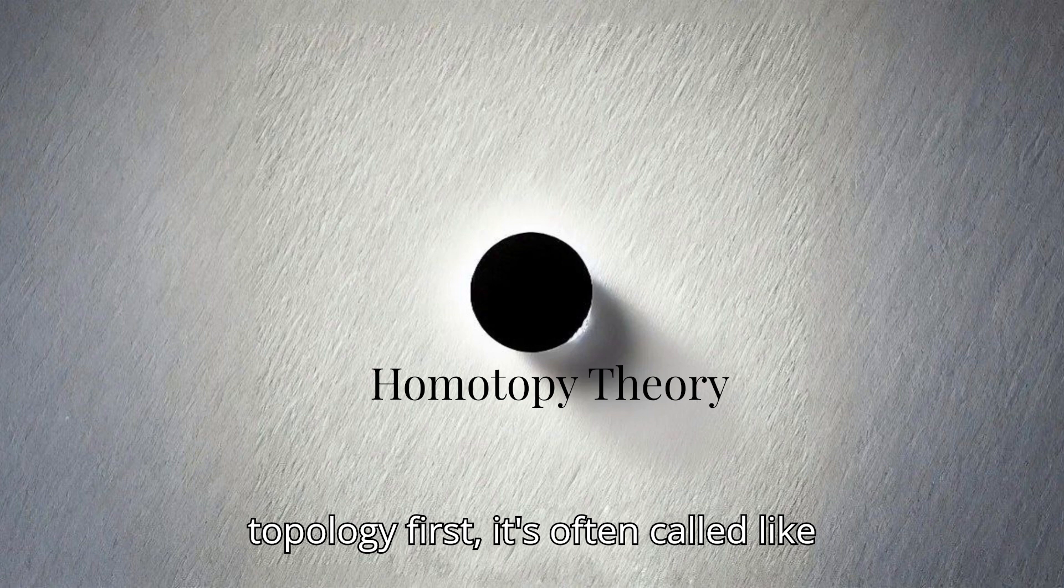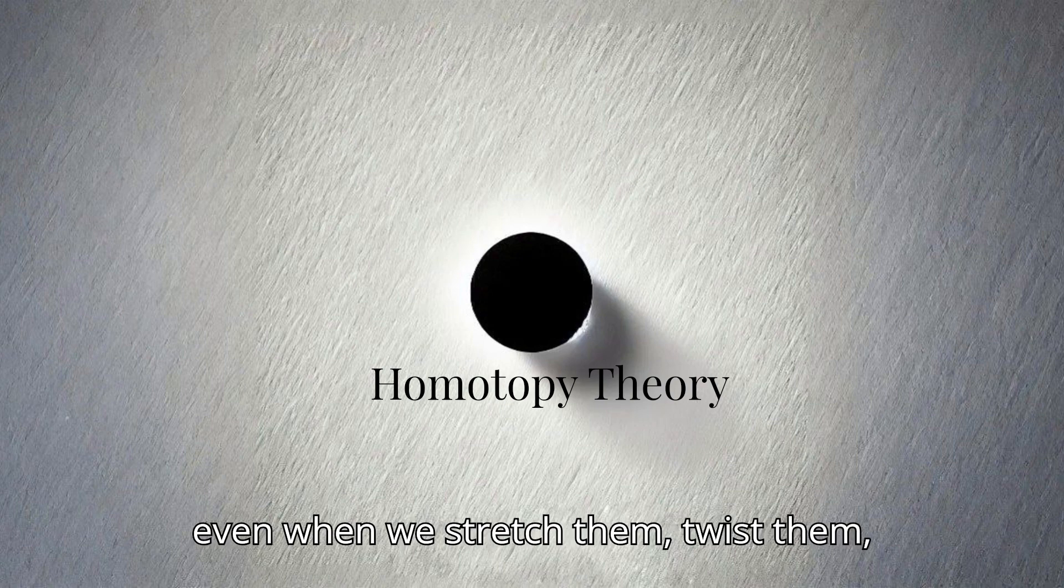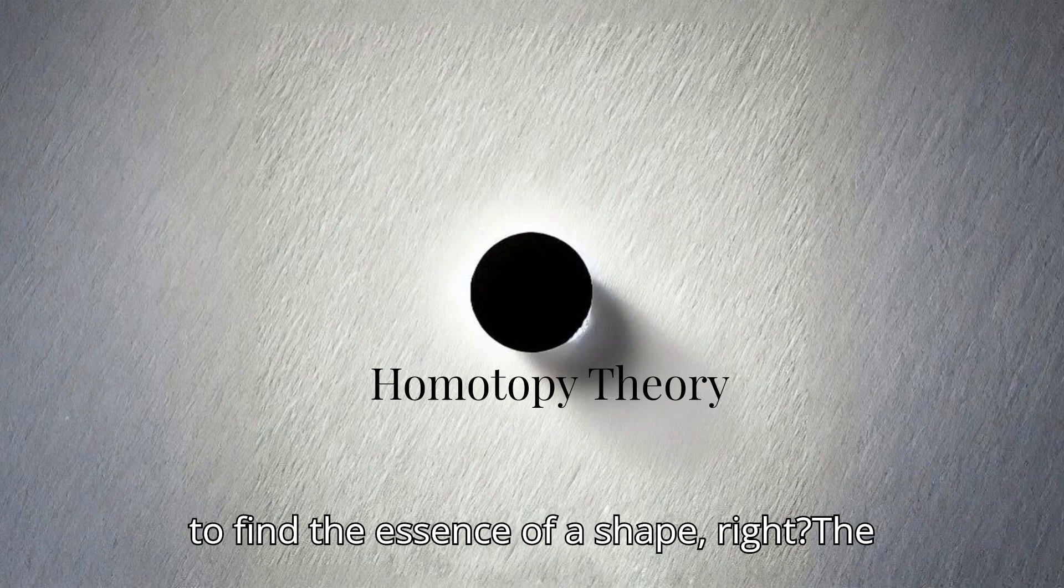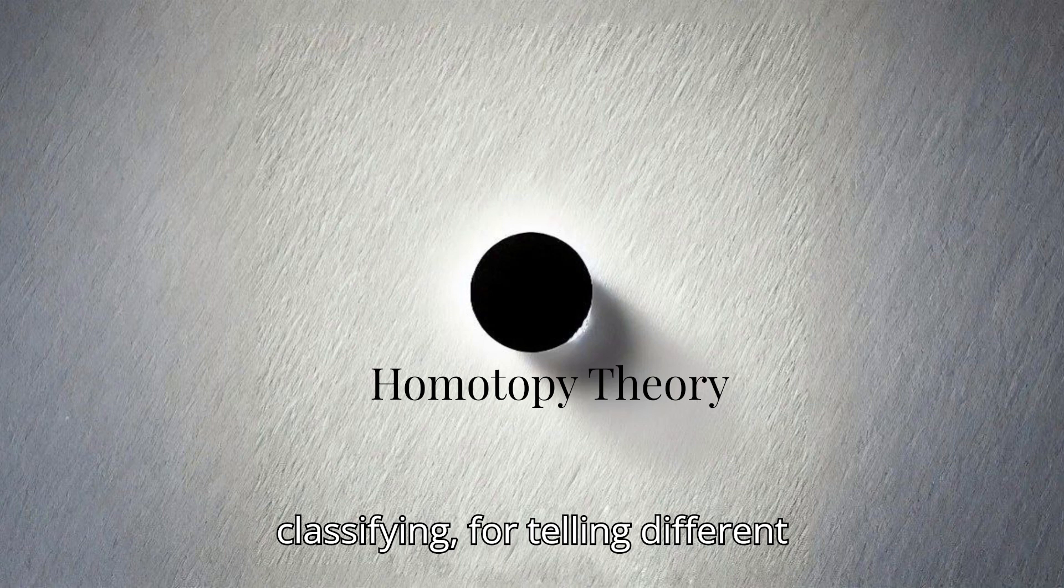So tell me more about how this secret code is actually used, because you mentioned topology and algebraic geometry. Can you give us a little peek into how homotopy theory is actually making a difference in these areas? Okay. So topology first, it's often called rubber sheet geometry. Rubber sheet geometry. Okay, I kind of like that. Yeah, it's a fun way to think about it. Basically in topology, we care about the properties of shapes that don't change, even when we stretch them, twist them, bend them. Okay, so it's like we're trying to find the essence of a shape. Right, the stuff that makes it it, regardless of its form.